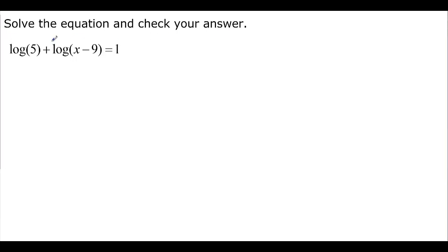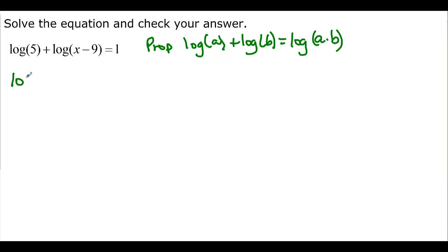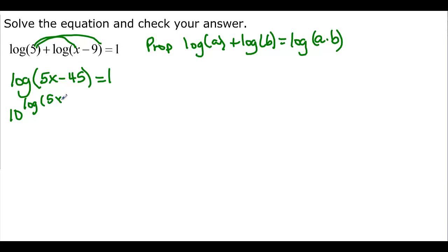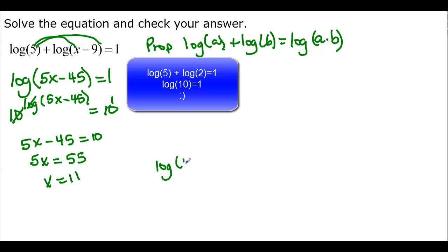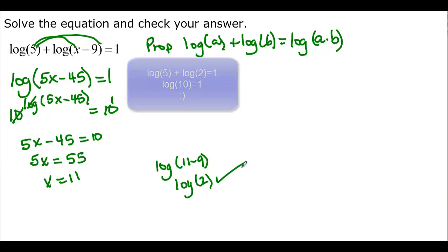So we solve the equation, then check the answer. Using the property log a plus log b equals log(ab), we combine: log of 5 times (x minus 9) equals log of (5x minus 45), equal to 1. Exponentiating: 10 to the log of (5x minus 45) equals 10 to the first. They cancel, leaving 5x minus 45 equal to 10. Adding 45: 5x equals 55, so x equals 11. Plugging 11 back in: log of (11 minus 9) is log of 2, which is positive — so x equals 11 works.